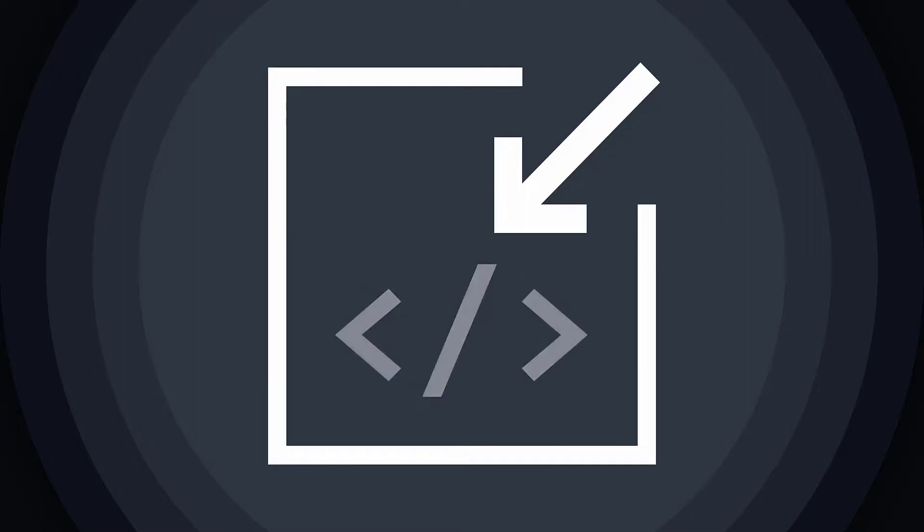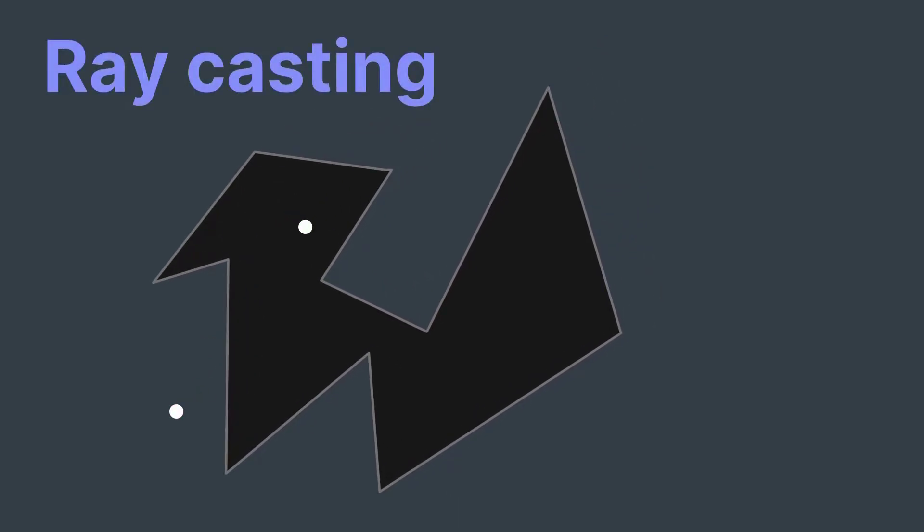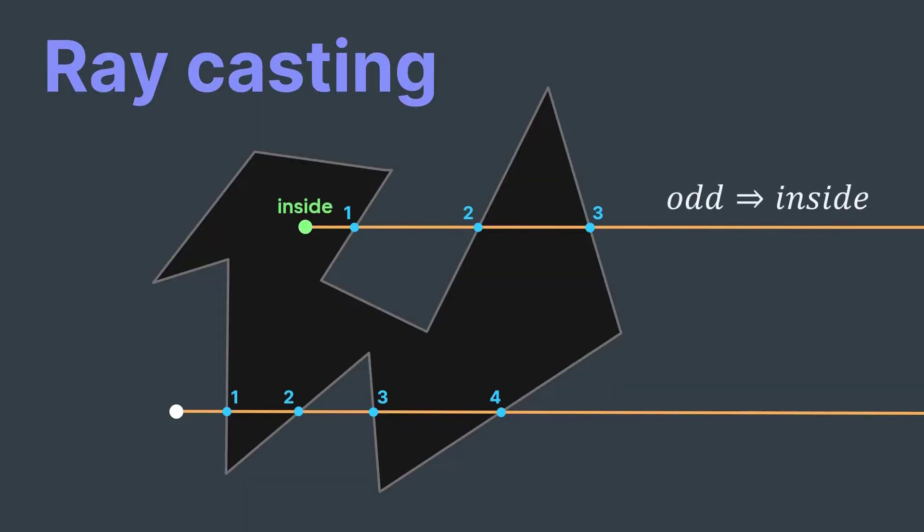We will learn an algorithm to know if a given point is inside the polygon or not. A simple algorithm to do so is ray casting. The idea is to cast a ray from the given point in any direction, and to count how many times it crosses one of the polygon's edges. If the number is odd, then the point is inside the polygon, else if it's even, then the point is outside. That's it.